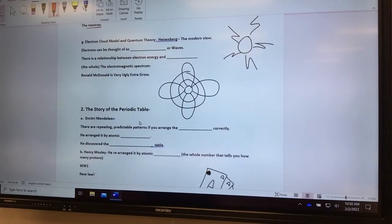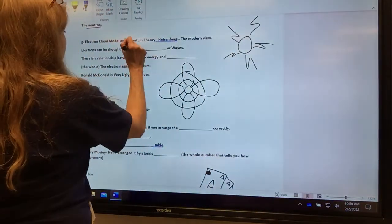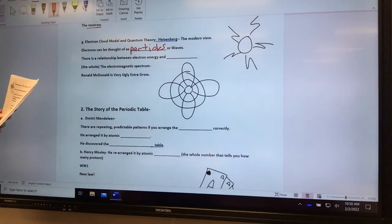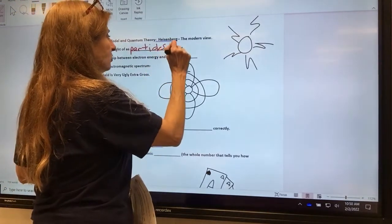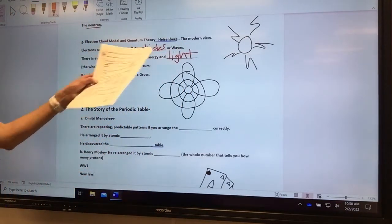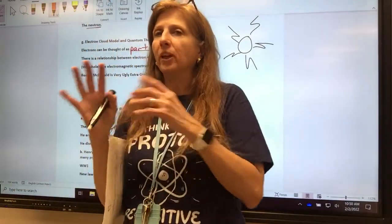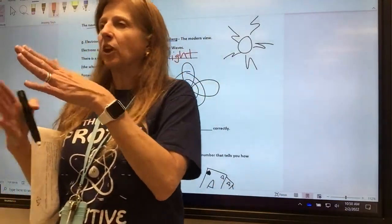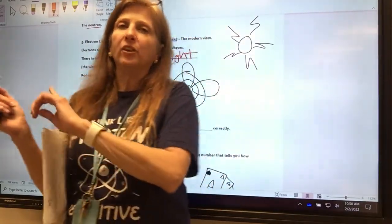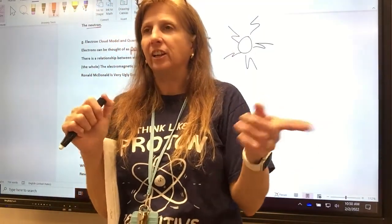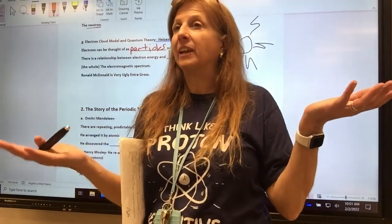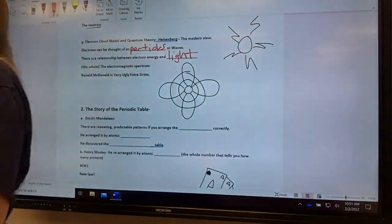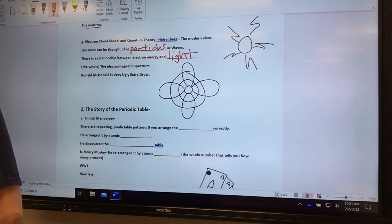He figured out that electrons can be thought of as particles or waves. The dual nature of matter. There's a relationship between electron energy and light. Then another thing that he in particularly thought of was he figured out that you cannot know the exact location of an electron and its speed at the same time. If you find its location, you have to stop it, and then you don't know its speed. And if you know its speed, it's already moved too fast, and you can't know its location. So I always ask kids, what did Heisenberg figure out? And they say, I don't know. And I say, you're right. Very good. Because that's what he figured out. You can't know the speed and location at the same time.